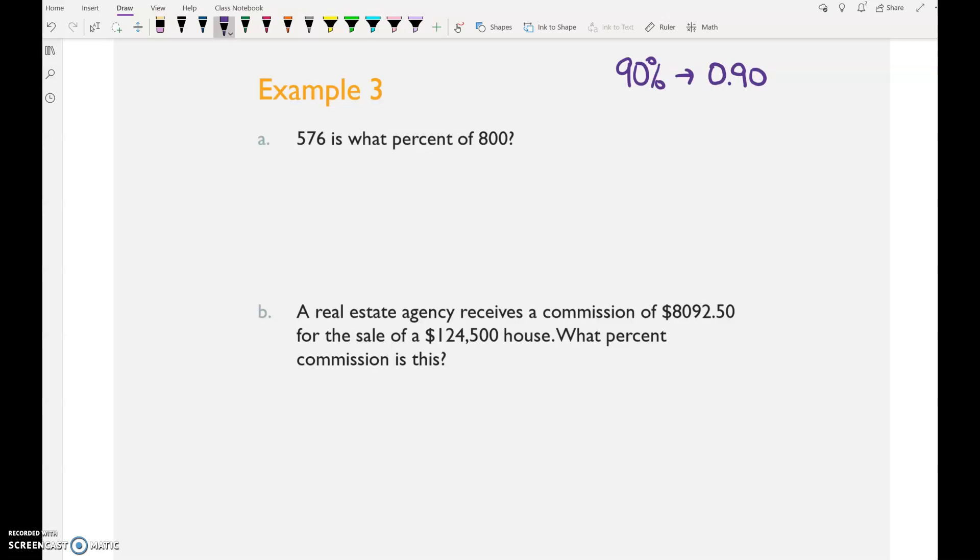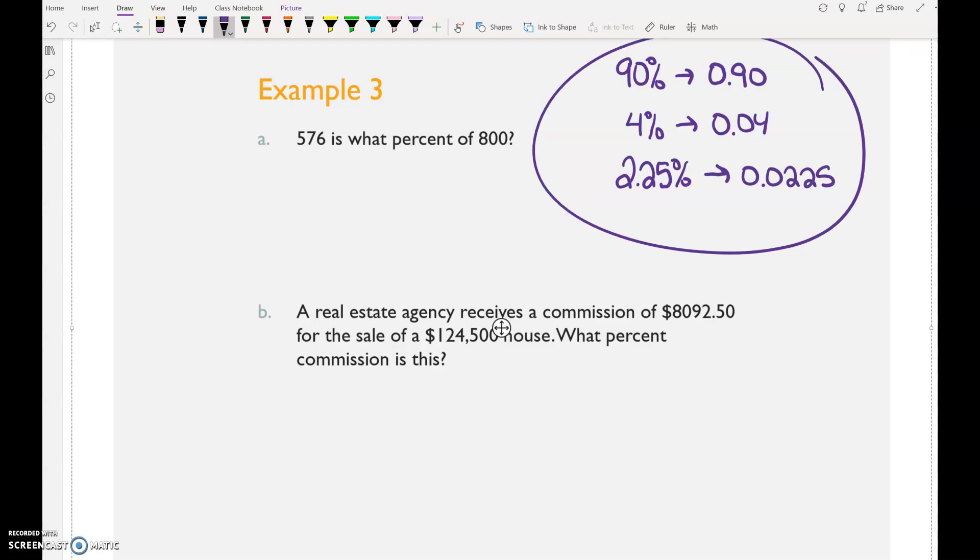What would 4% be as a decimal? 0.04. What if I had 2.25%? What would that be as a decimal? 0.0225. There. Now you at least have a couple things to look at to remind yourself as you're converting from percents to decimals.